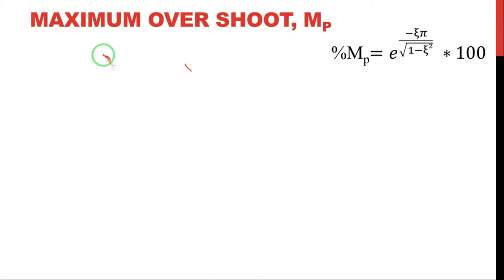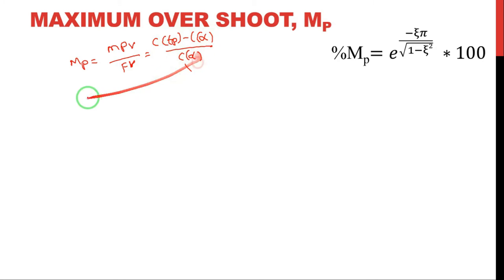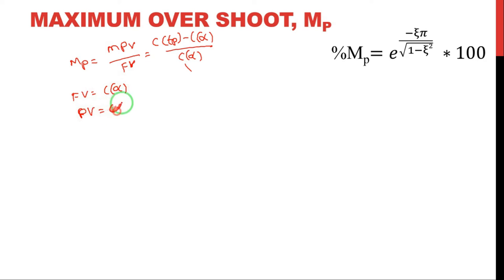First of all, what do you mean by maximum peak overshoot? Maximum peak overshoot is the ratio of maximum peak value to the final value. The maximum peak value is the difference between the peak value and the final value, divided by the final value. The final value is indicated by c(∞) and the peak value is indicated by c(tp).